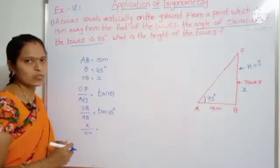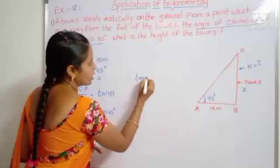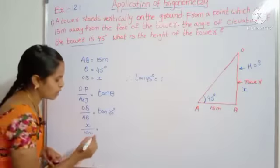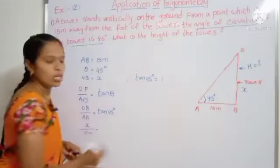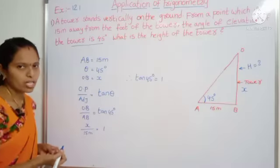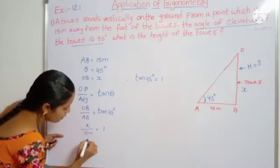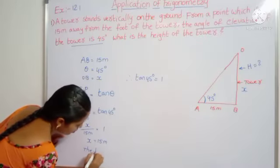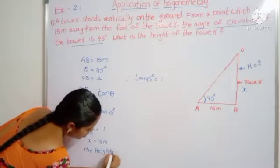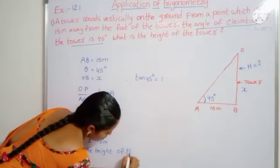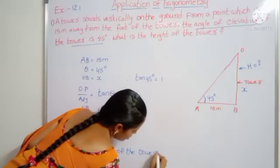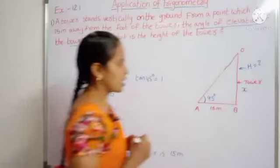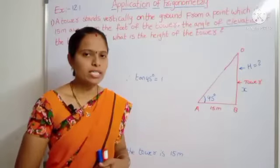Tan 45 degrees value — already we know this one — tan 45 degrees equals 1. So substitute: tan 45 equal to 1. Then X equal to 15 meters. Therefore, the height of the tower is 15 meters. Have you understood, students?